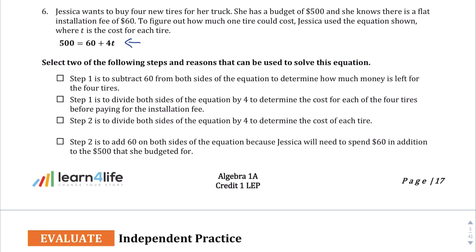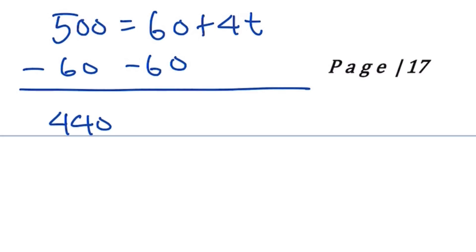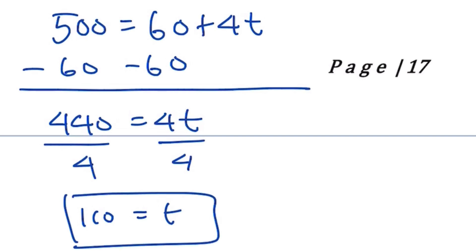So let's go ahead and I think it's more useful to do that first. So I'm going to find some space wherever I can. So 500 = 60 + 4T. So what I'm going to do is subtract 60 from both sides. And I end up with 440 = 4T. Divide by 4. And so what we get is each tire is $110.